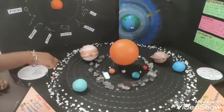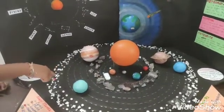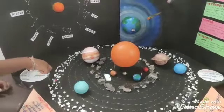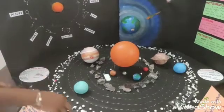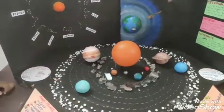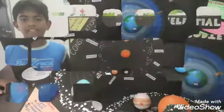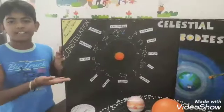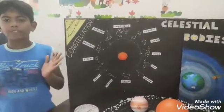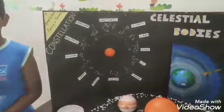Pluto, Haumea, Makemake and Eris are in the Kuiper belt. And here is the constellation — a group of stars forming a pattern is called a constellation.